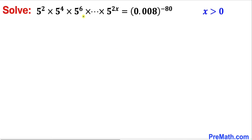Welcome to pre-math. In this video we are going to solve this given exponential equation: 5 squared times 5 to the power 4 times 5 to the power 6, going all the way to 5 to the power 2x, equals 0.008 to the power of negative 80, where x is greater than 0.